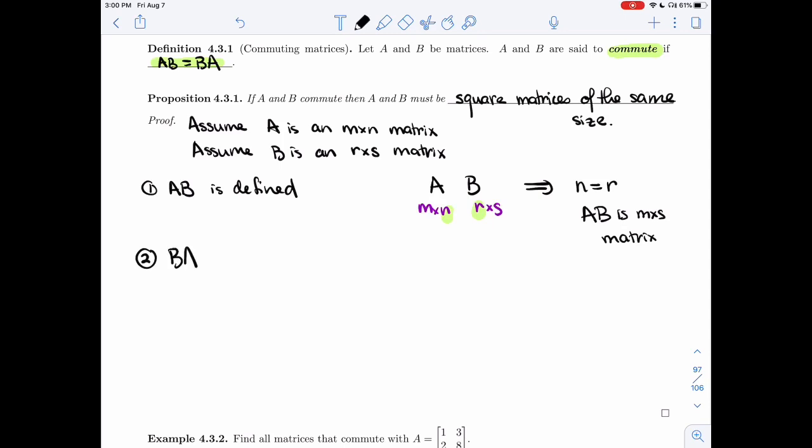Now, BA is also defined, and so if I look at what BA is equal to, now I'm going to start with the R by S, and the M by N is going to come second. That middle dimension must match, so S equals M and BA is an R by N matrix.